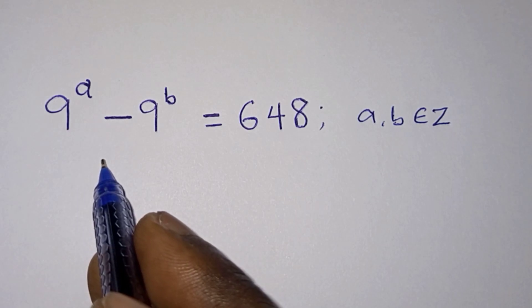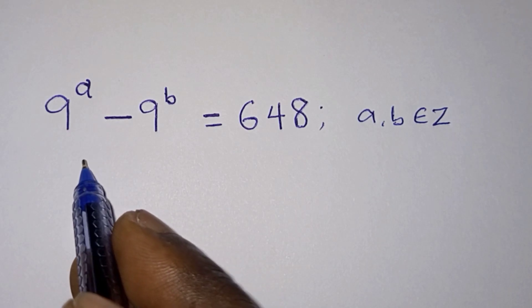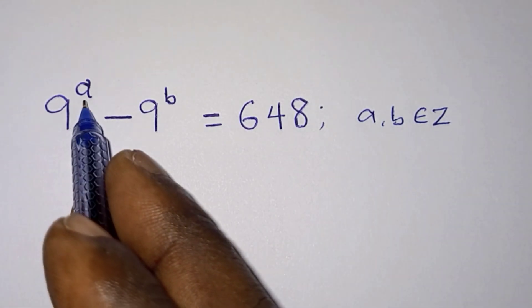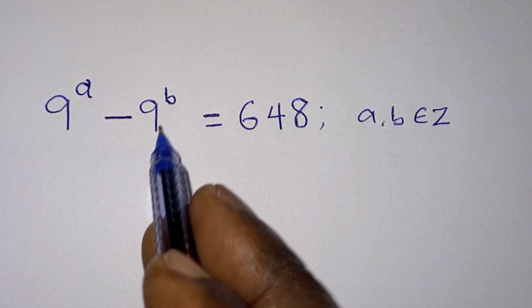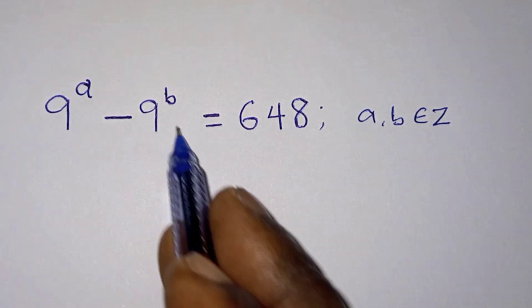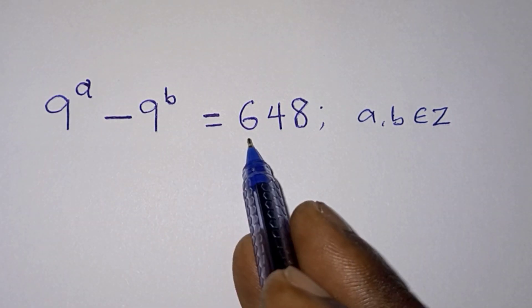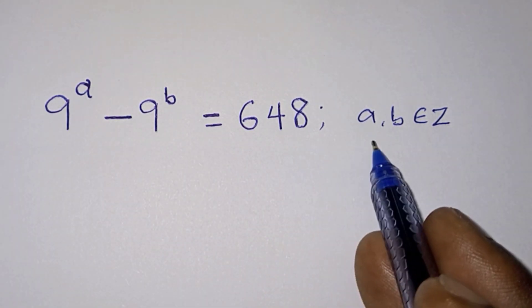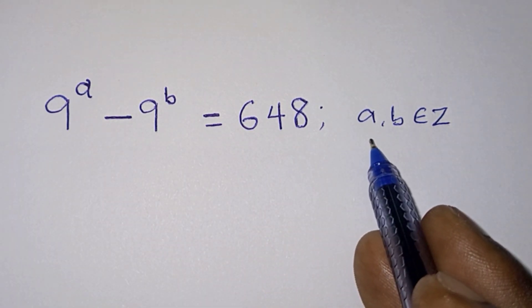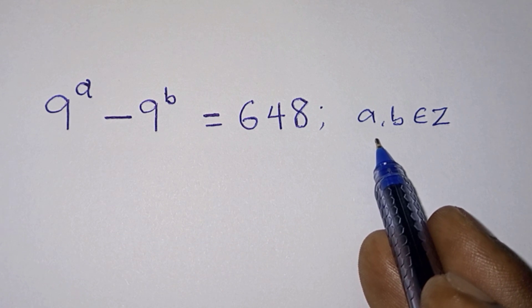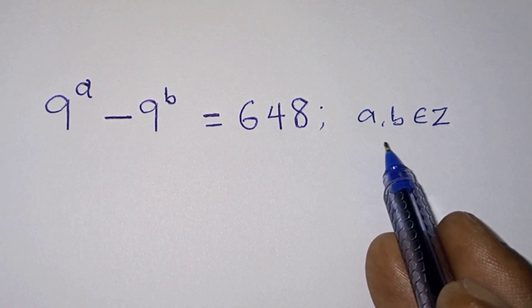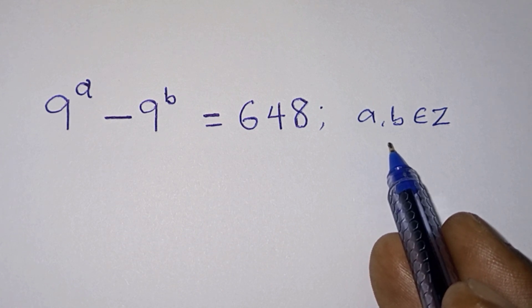Hello everyone. In this video we have this interesting problem: 9 to the power a minus 9 to the power b is equal to 648, and we have to find the values of a and b, where a and b are integers.